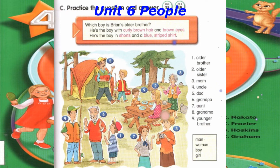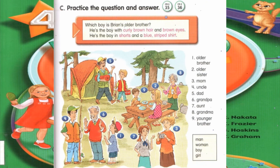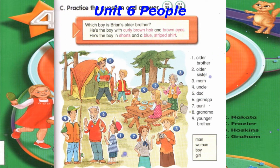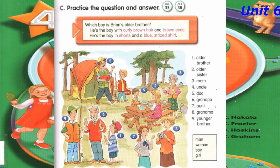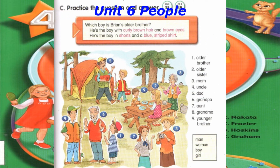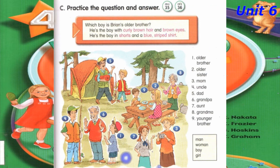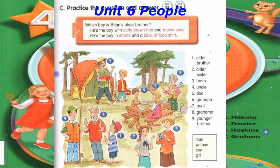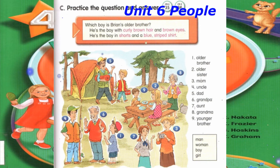Number 7: Which woman is Brian's aunt? She's the woman with long red hair, a ponytail, and green eyes. She's the woman in the gray blouse, blue tie, and green skirt. Number 8: Which woman is Brian's grandma? She's the woman with straight gray hair and blue eyes. She's the woman in the yellow vest and checkered skirt. Number 9: Which boy is Brian's younger brother? He's the boy with brown hair and brown eyes. He's the boy in the orange and yellow striped shirt.